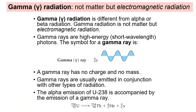Gamma radiation is electromagnetic radiation — it's like light, only higher energy. It has no charge and no mass and is usually emitted in conjunction with other types of radiation. It's very dangerous because it is so high energy, so gamma rays are something we need to protect from.